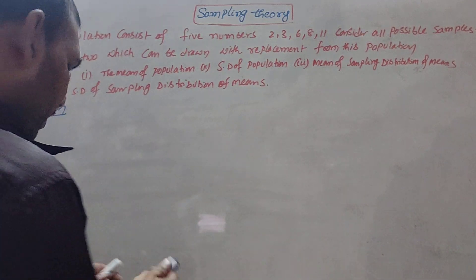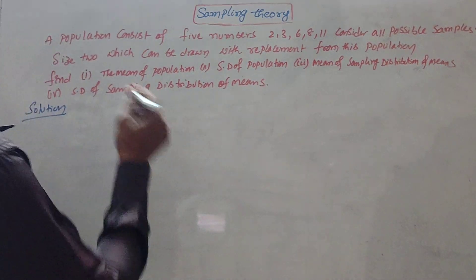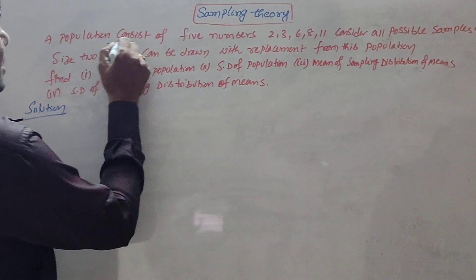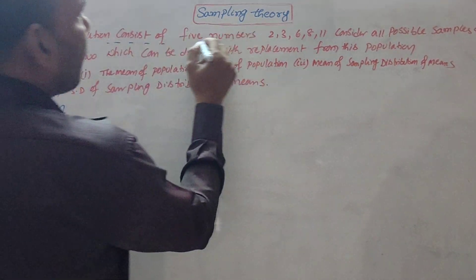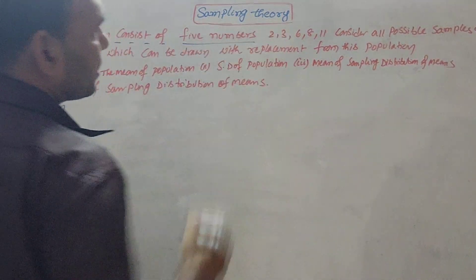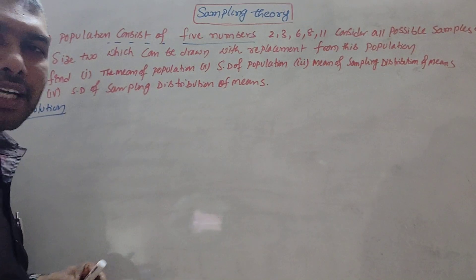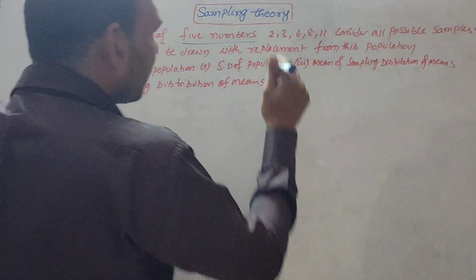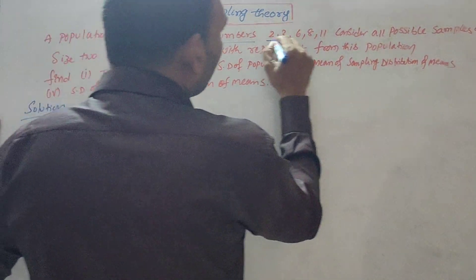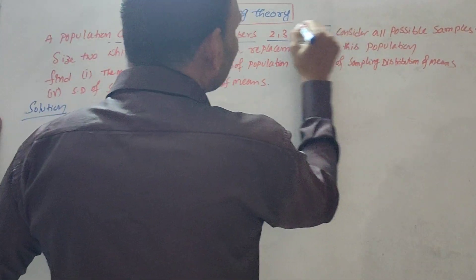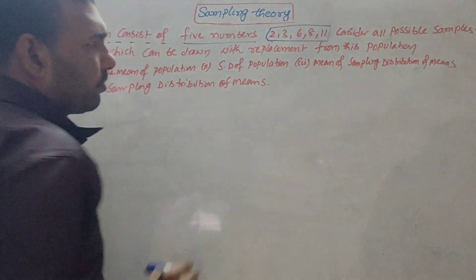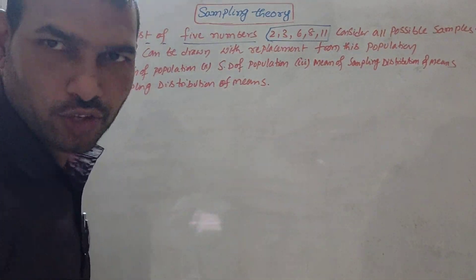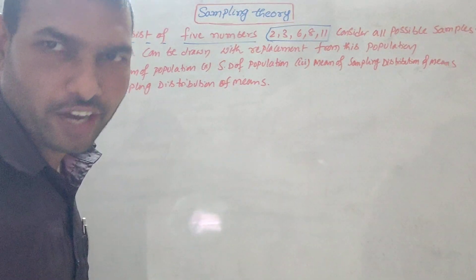The question is: a population consists of five members. In the population, there are five members. The members are 2, 3, 6, 8, and 11. So the population size is five, and that is also given.